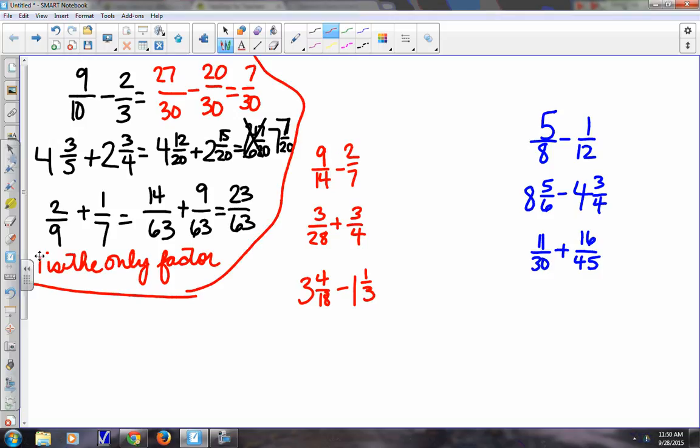What you're noticing about group one is that one is the only factor of both denominators in this group here. That is one strategy of trying to find a common denominator. And the way we figured it out is we used the product of the two denominators to get our common denominator. That's one strategy of finding a common denominator.